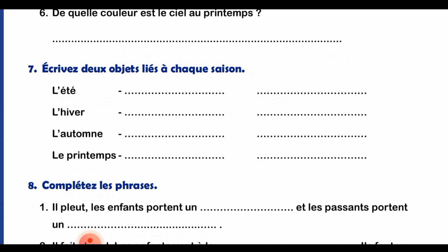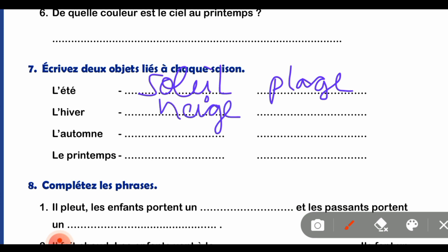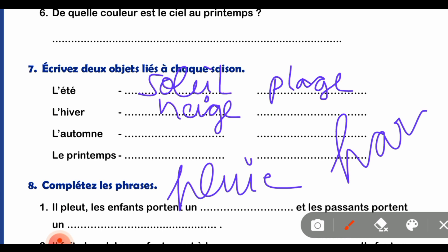Question number 7 says you have to write two objects related to each season. In summer you can write 'soleil' (sun) and 'plage' (beach). In winter you can write 'neige' (snow) and 'bonhomme de neige' (snowman). In autumn season you can write 'pluie' (rain) and 'imperméable' (raincoat). In spring you can write 'ciel' (sky) and 'parc' (park) because kids play in the park during that season, and 'oiseaux' (birds).